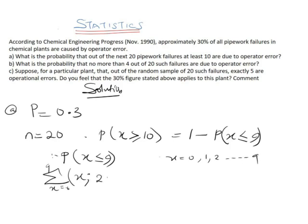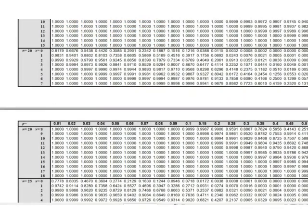Here n = 20 and p = 0.3. We could calculate each value from 0 to 9 step by step, but there is a simpler way. We can use the binomial cumulative distribution table, where we locate our n, look up our probability, and directly find the cumulative value for our range of x.